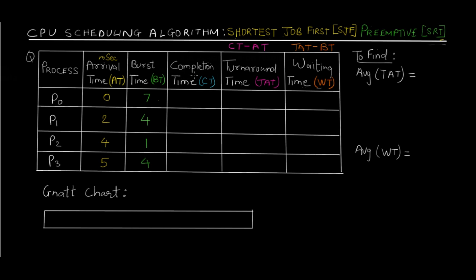Completion time is when the process actually finishes. Turnaround time is the total time spent by the process inside the queue. Waiting time is the time the process was inside the queue but did not get CPU time — meaning the CPU was busy processing some other process. We also need to find average turnaround time and average waiting time. To calculate all these, we need to plot a Gantt chart of how processes came into the queue and how time was allotted.